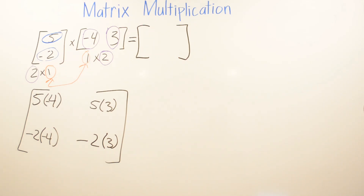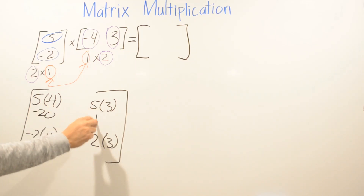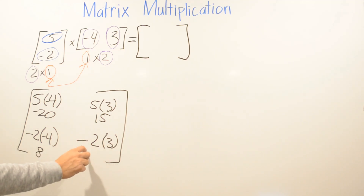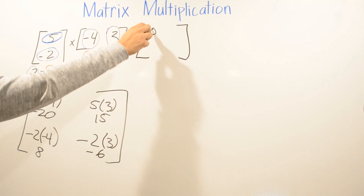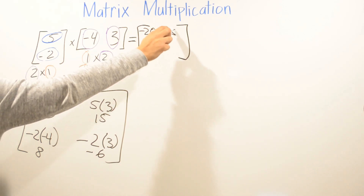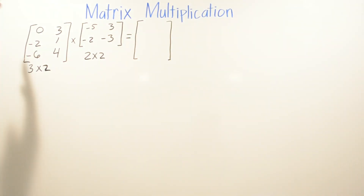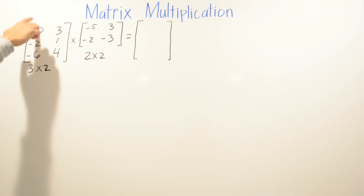So we get: 5 times negative 4 is negative 20. 5 times 3 is 15. Negative 2 times negative 4 — a negative times a negative is a positive — is 8. And negative 2 times 3 is negative 6. So our result matrix is: negative 20, 15, 8, and negative 6.